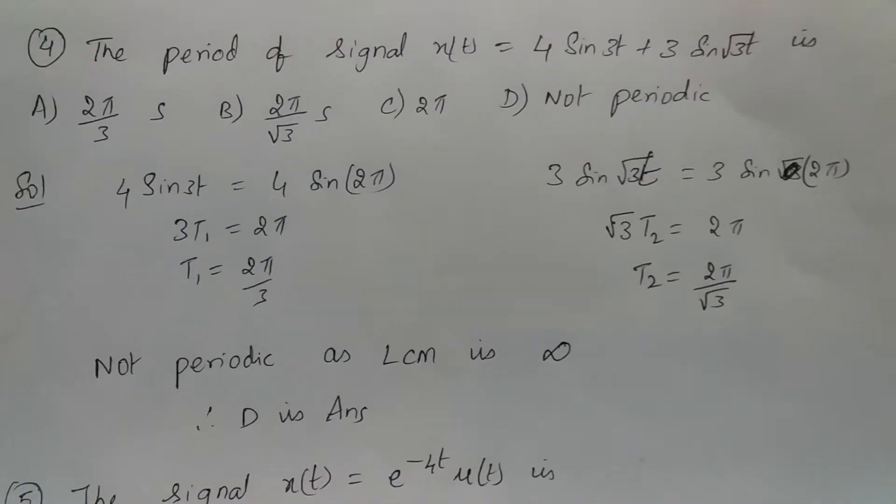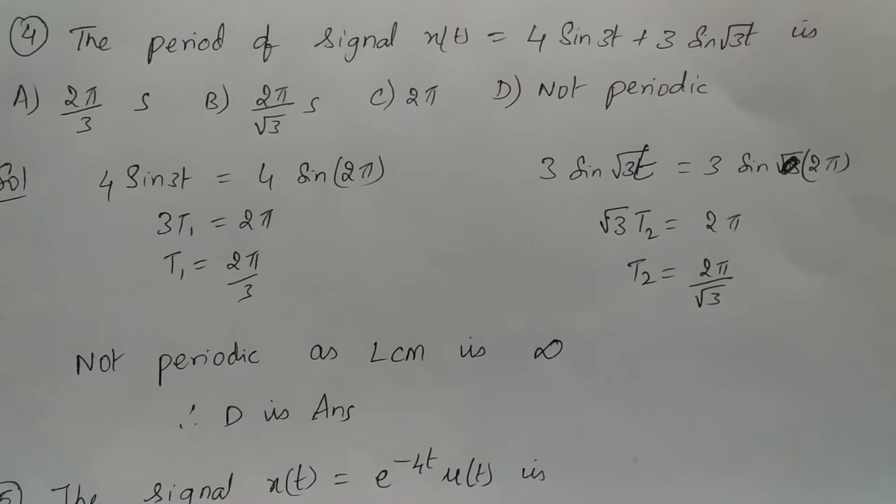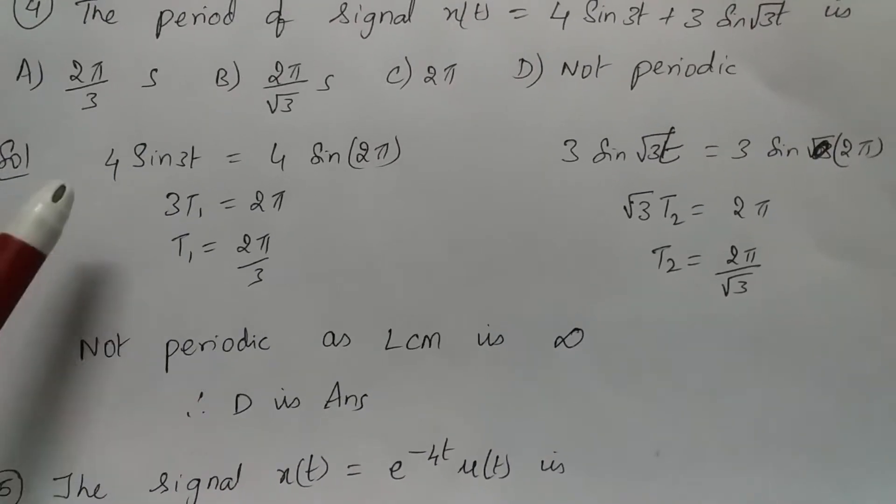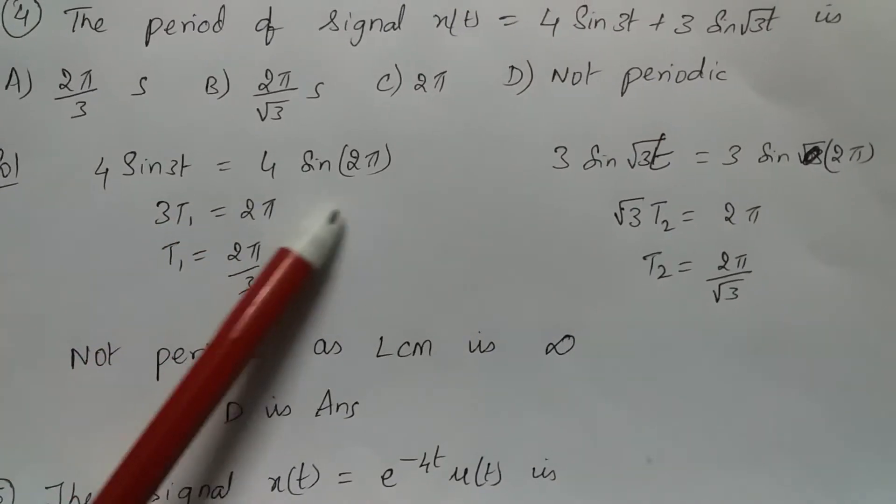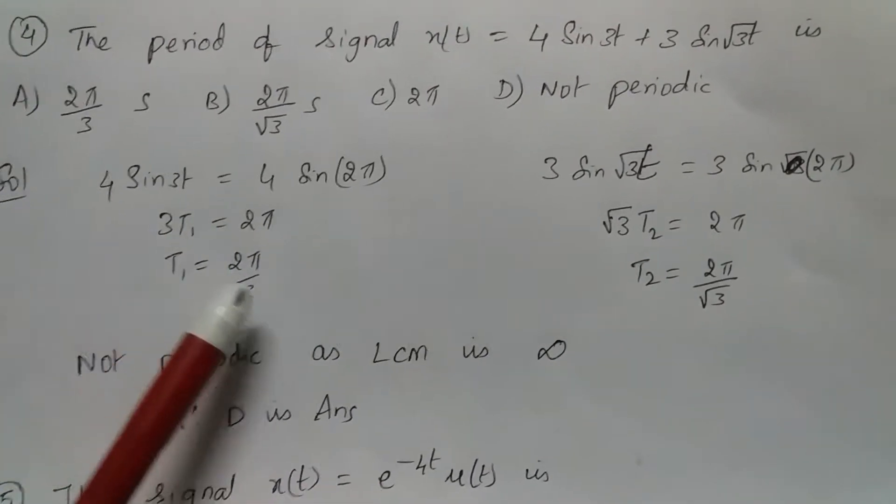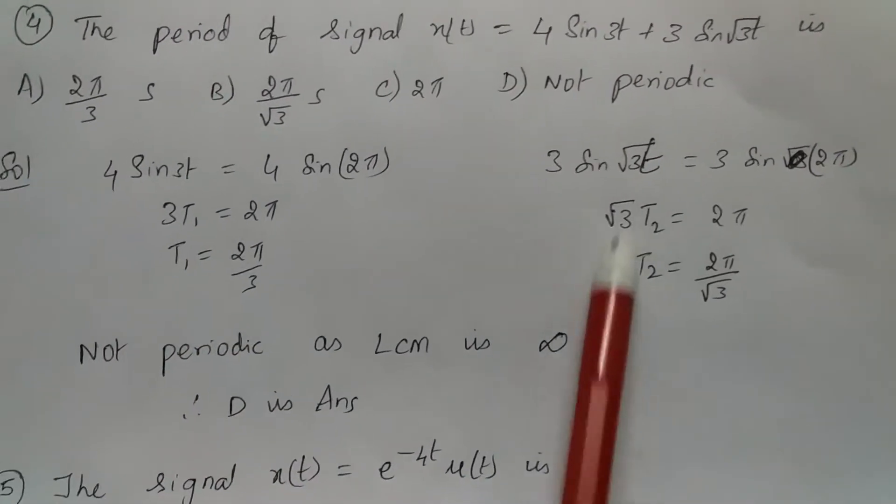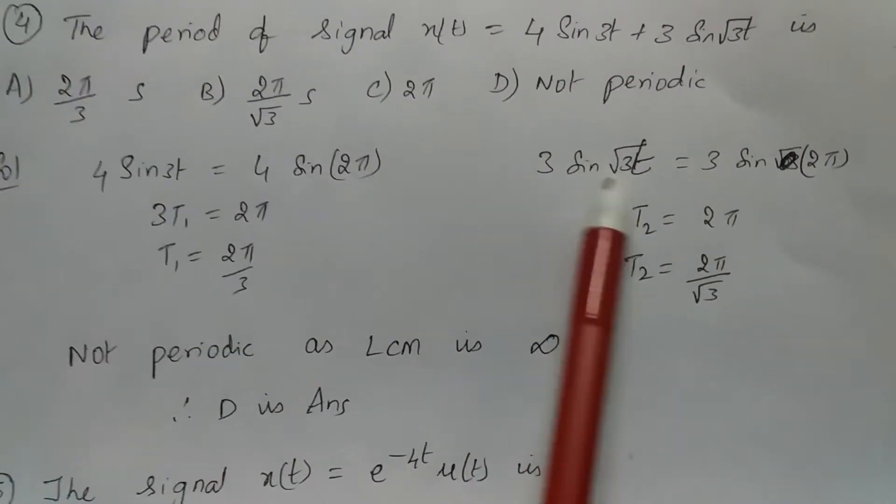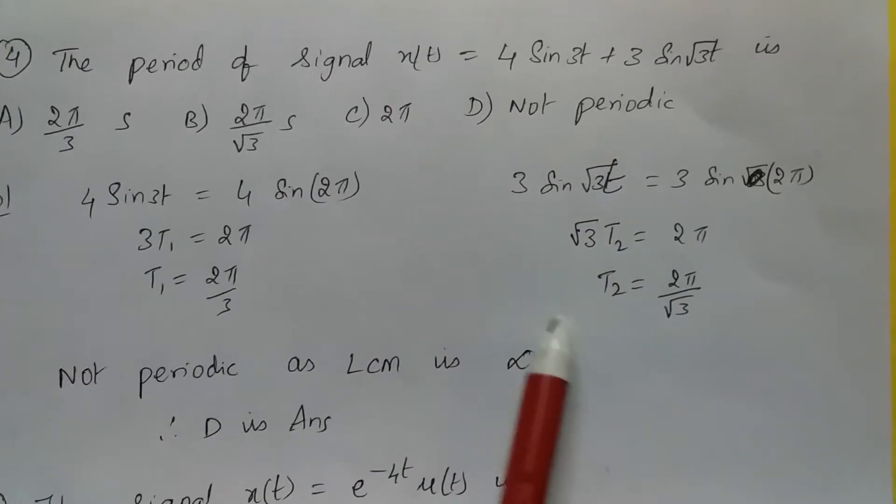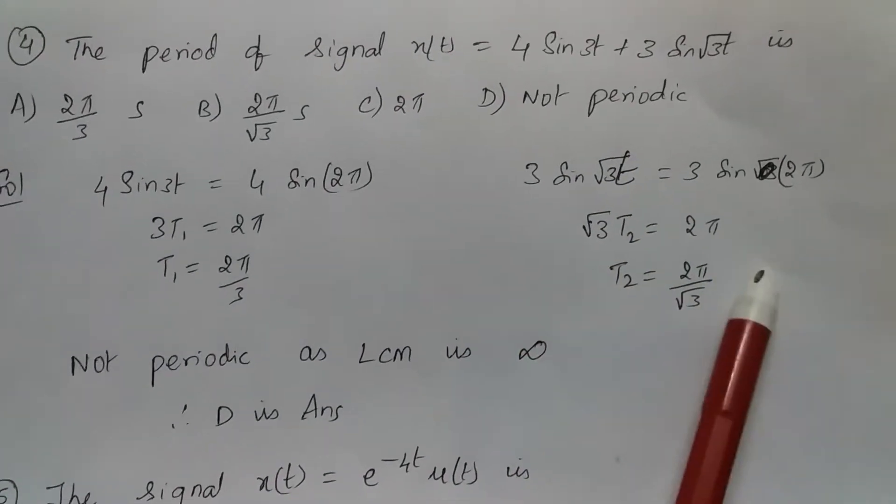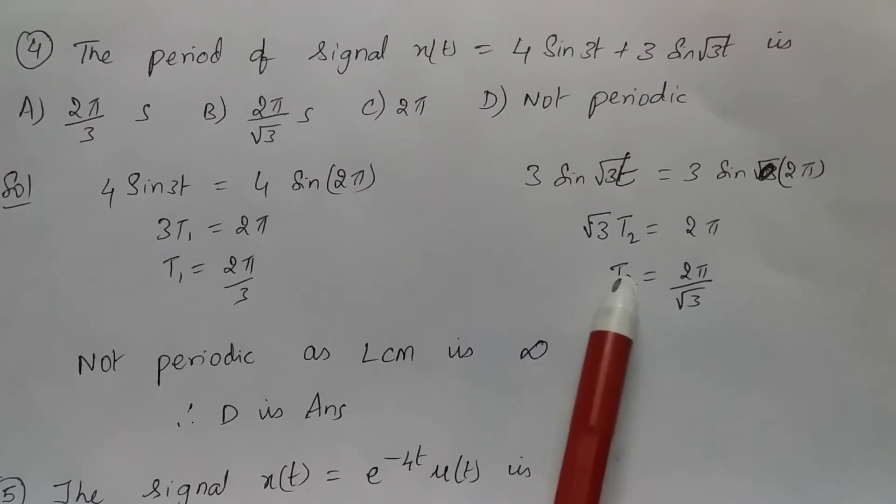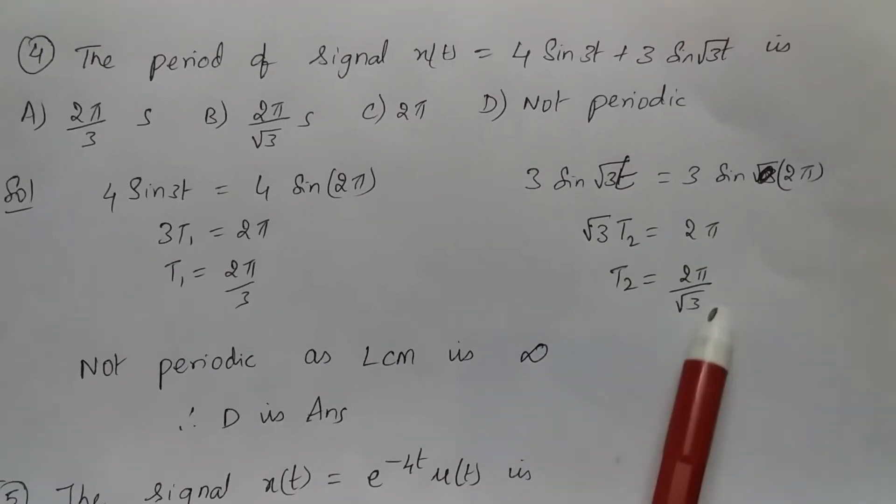The period of a signal x(t) is equal to 4 sin 3t plus 3 sin √3 t. Now let's equate 4 sin 3t is equal to 4 sin 2π. So 3t1 is equal to 2π, t1 is 2π by 3. Similarly, if you equate 3 sin √3 t is equal to 3 sin 2π and let's say this is t2, so √3 t2 is equal to 2π, the time period t2 is equal to 2π by √3.